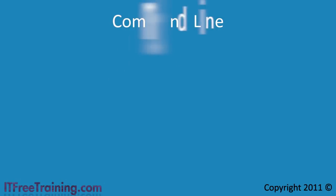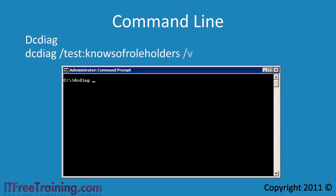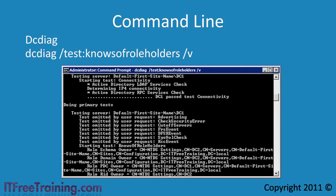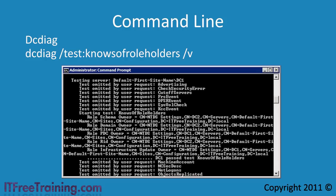Windows also comes with a command-line tool called DC Diag that can be used to find out which domain controller has which roles. If you run this command with /test:knowsofroleholders, this will tell you which domain controllers have which roles. I have added the /v switch for verbose to give additional information. Scrolling up, all five operation master roles are listed along with which domain controller they are currently located on.